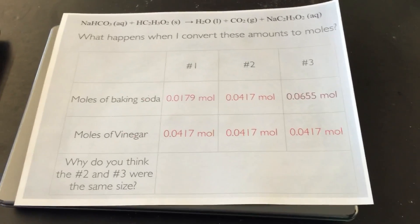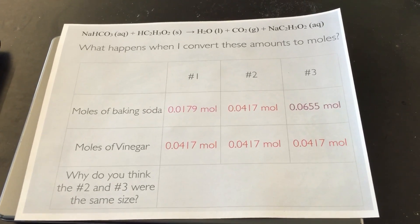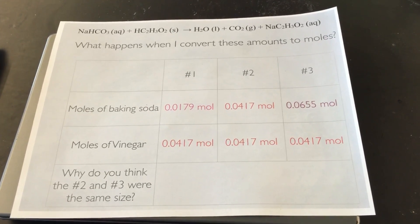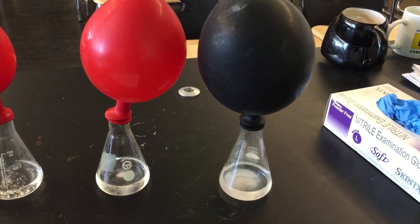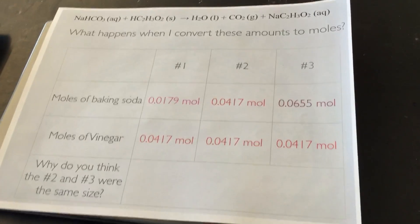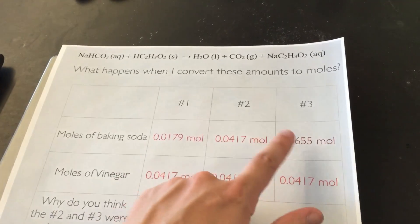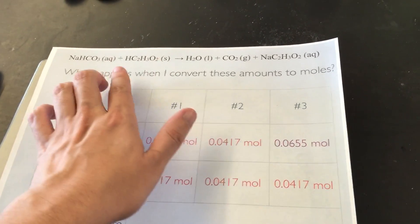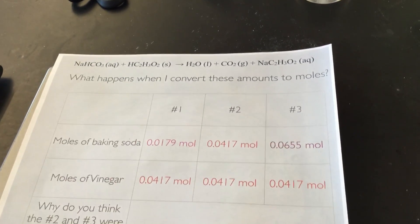So now the question that you're going to be answering on your paper is, why do you think that 2 and 3 were approximately the same size? I mean, they're still going, but you can actually kind of see they look a little bit more similar now than they did a couple of minutes ago. So why are they approximately the same size? Think of what's going on in these reactions. And also look at our balanced equation. It's a one to one ratio between baking soda.